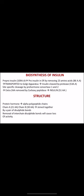Biosynthesis of insulin starts with pre-proinsulin, containing 109 amino acids. It is converted to proinsulin in the endoplasmic reticulum by removing 23 amino acids, leaving 86 amino acids.